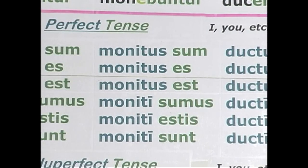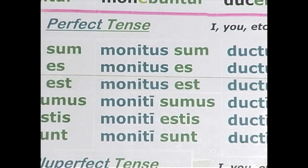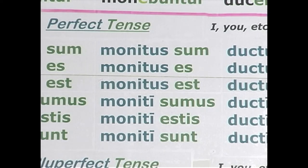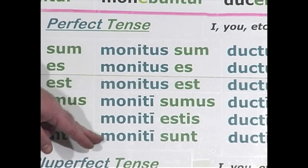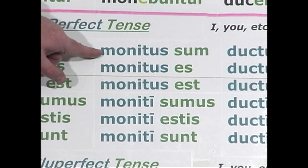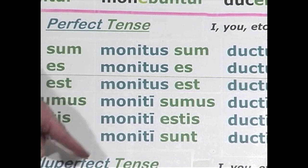For the second conjugation verb moneo, the fourth principal part we learned as monitum or monitus — the difference is -us is a masculine singular ending, -um is a neuter singular ending, but it's really the same entity: the perfect passive participle. So monitus sum, monitus es, monitus est — I have been warned, you have been warned, he has been warned, we, you plural, they have been warned.